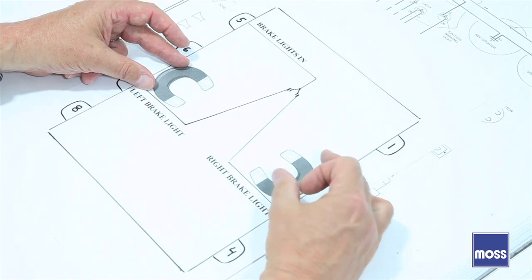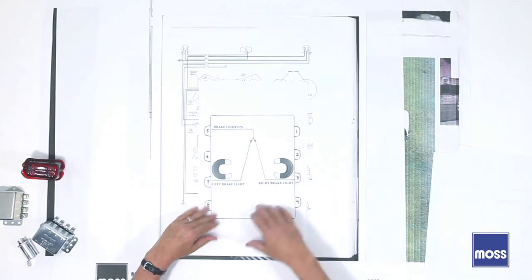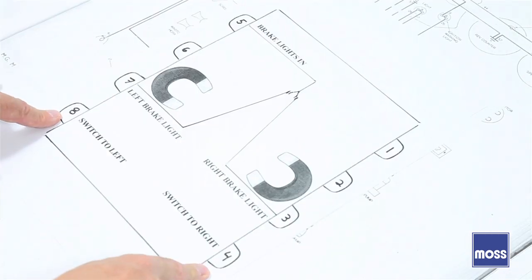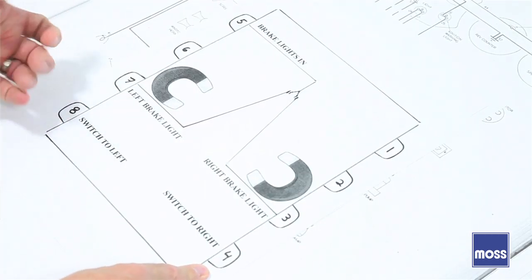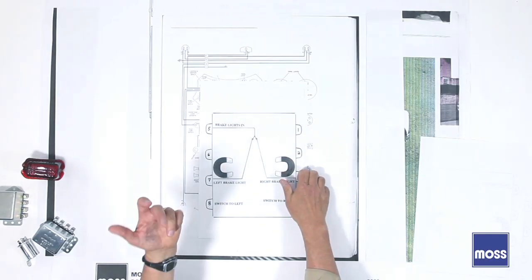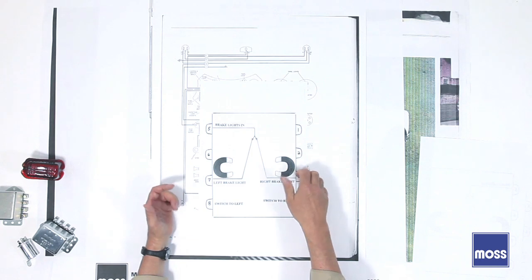Now, electromagnets do nothing unless they've been given electricity. So coming in from number four and number eight, we have power from the right side of the switch and the left side of the switch. So inside the cockpit,